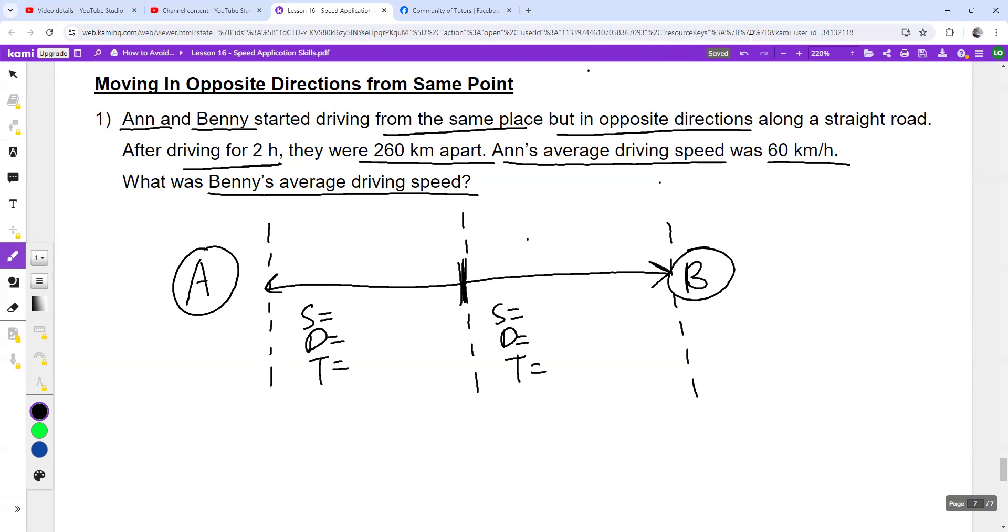Then what do you do next? Then you block the numbers. So you block the numbers and you put inside the model. So where do I put 2 hours? So they drove for 2 hours. And that's where you put 2 hours. And they were now 260 kilometers apart. So your distance in between will be something like this. So after they drove for 2 hours, they are now 260 km. And Ann's speed was 60 kilometers per hour, which is over here. And can you find what is Benny's driving speed?